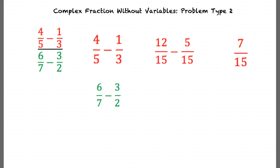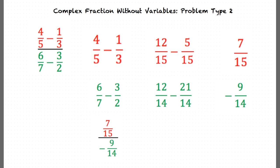Now we need to simplify the denominator by finding the common denominator of 14. This gives us 12 over 14 minus 21 over 14. By simplifying, we get negative 9 over 14. Now that we have simplified the numerator and the denominator, we can rewrite our expression, giving us 7 over 15 divided by negative 9 over 14.